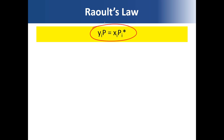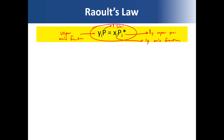Raoult's Law is this expression where yi is the vapor mole fraction, P is the total pressure, xi is the liquid mole fraction, and P_i* is the vapor pressure of the liquid — the liquid vapor pressure. This relationship details the connection between the liquid mole fraction and the vapor mole fraction.